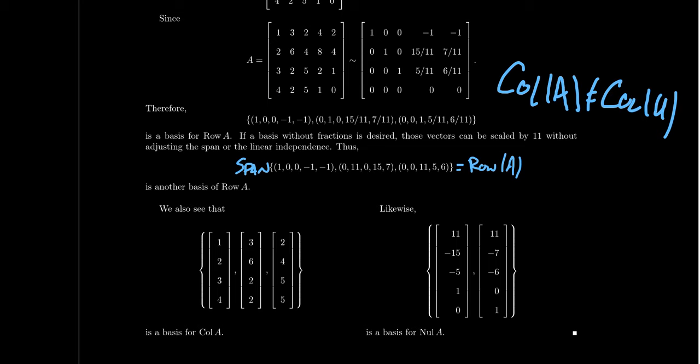For the column space, you use the fact that pivot columns don't move during row reduction to identify which columns of the original matrix to grab. For the row space, you use the invariance of the row space under row reduction to get a basis directly from the echelon form.